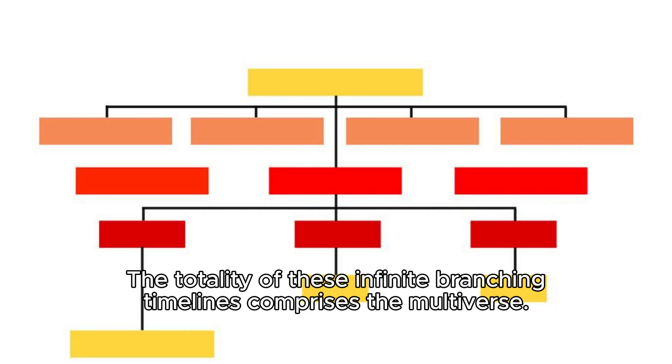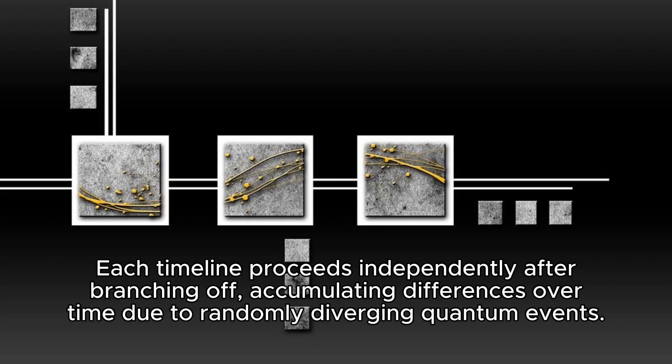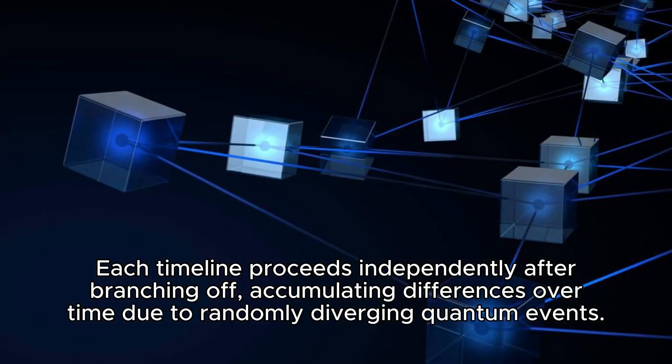The totality of these infinite branching timelines comprises the multiverse. Each timeline proceeds independently after branching off, accumulating differences over time due to randomly diverging quantum events.